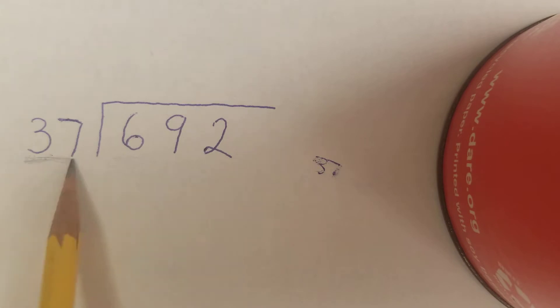We're skip counting by 37, so how many times do we have to count by 37s to divide into this number? I'm going to look at my first number, which is 6. Can I skip count by 37s and get to 6? No, 37 is too big, so I have to use two numbers. In this case, it is 69.